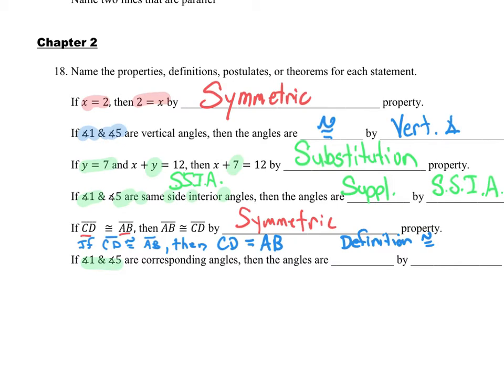If angle 1 and angle 5 are corresponding angles, then they are blank by blank. What do you remember about corresponding angles? They're congruent — so they are congruent, and that is by the corresponding angle postulate.